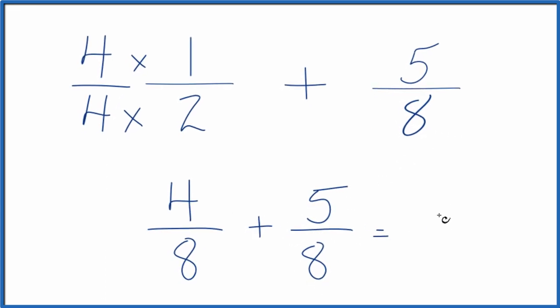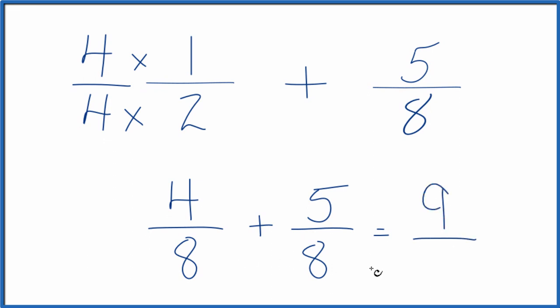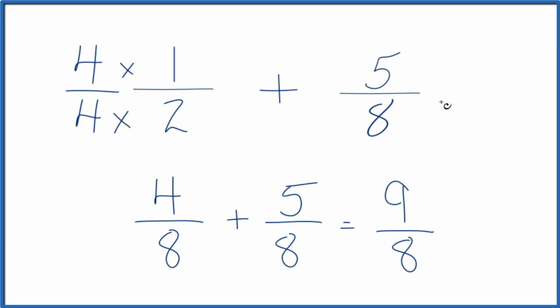Four plus five, that equals nine. And then we bring the eight across, nine-eighths. So when we add one-half plus five-eighths, we get nine-eighths.